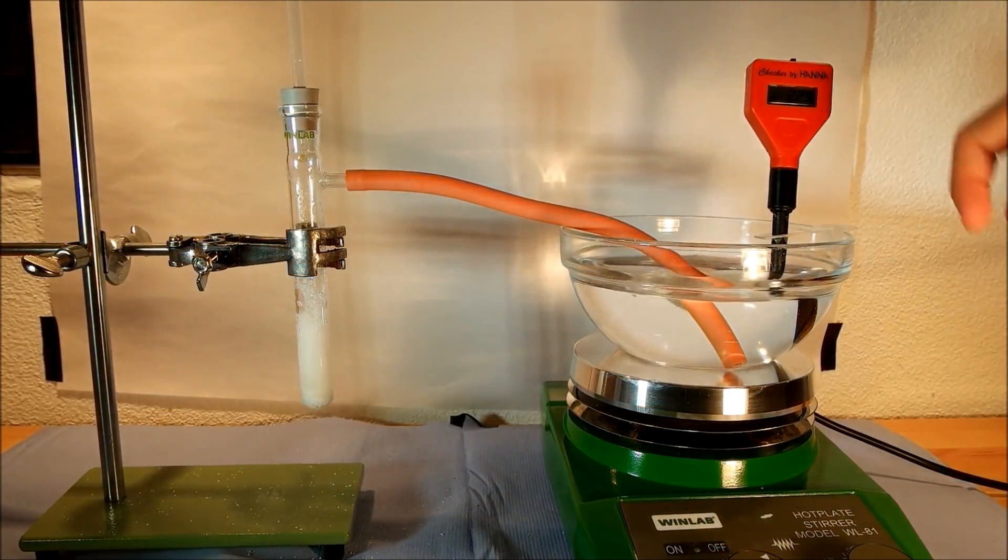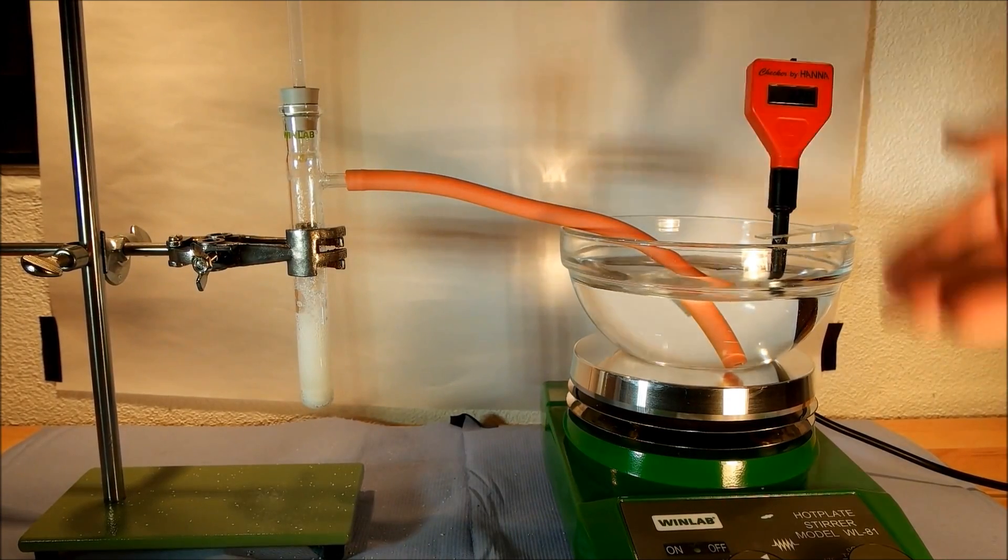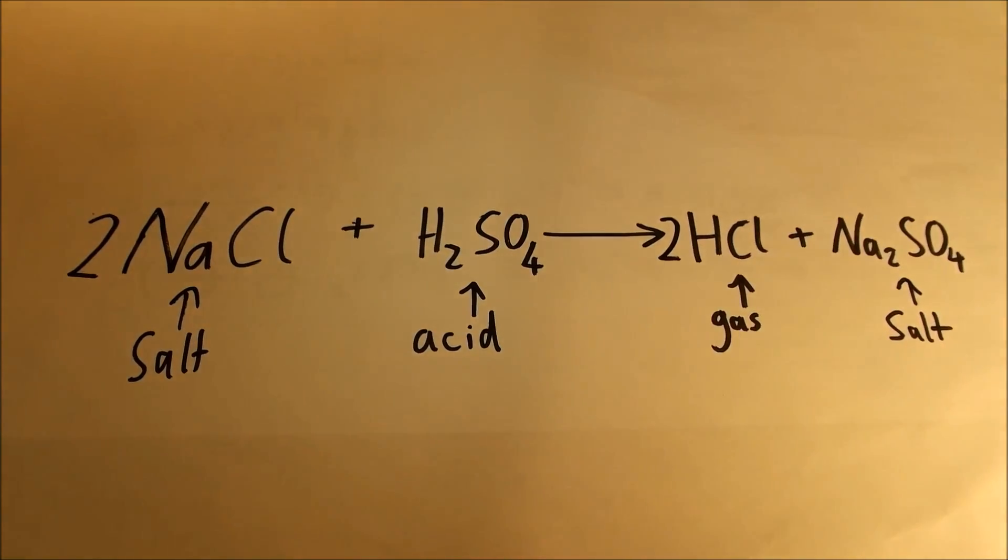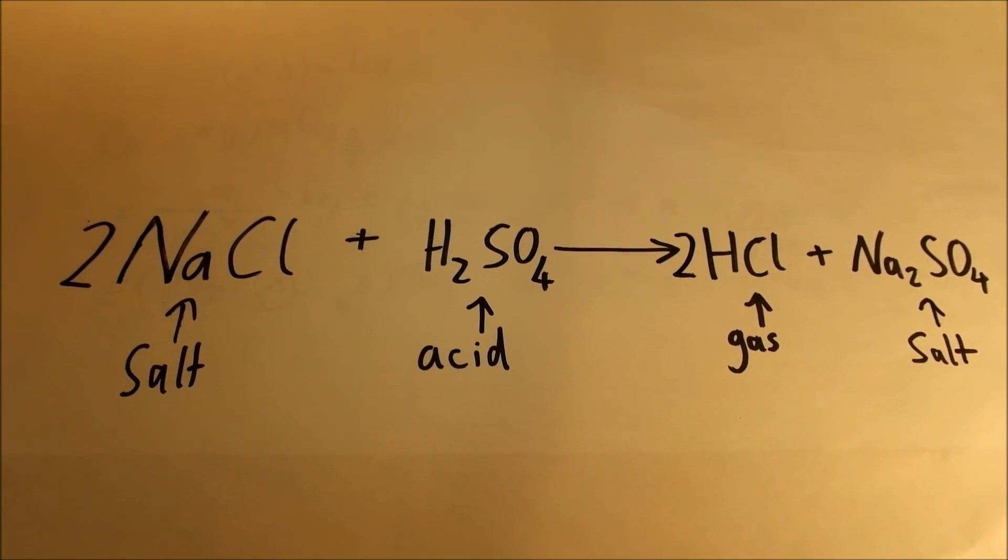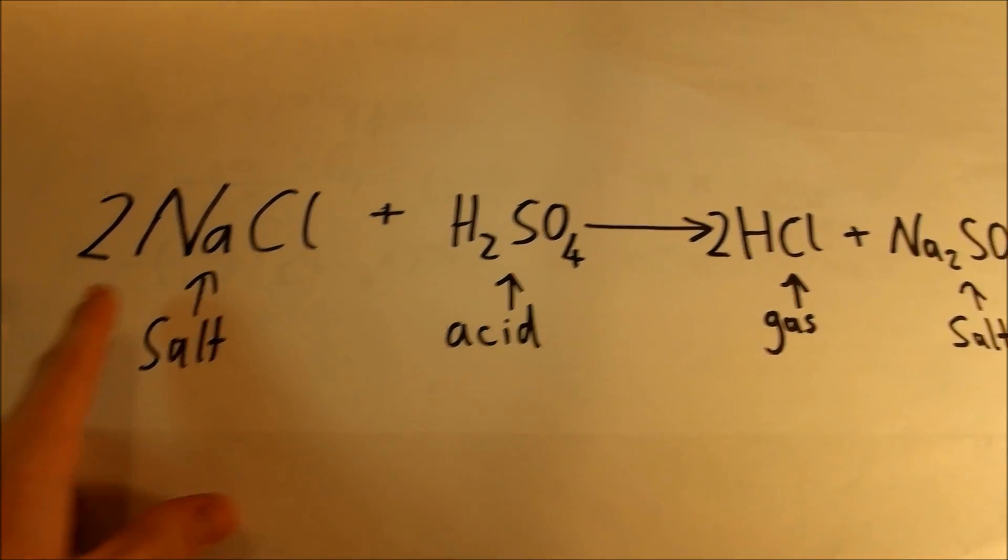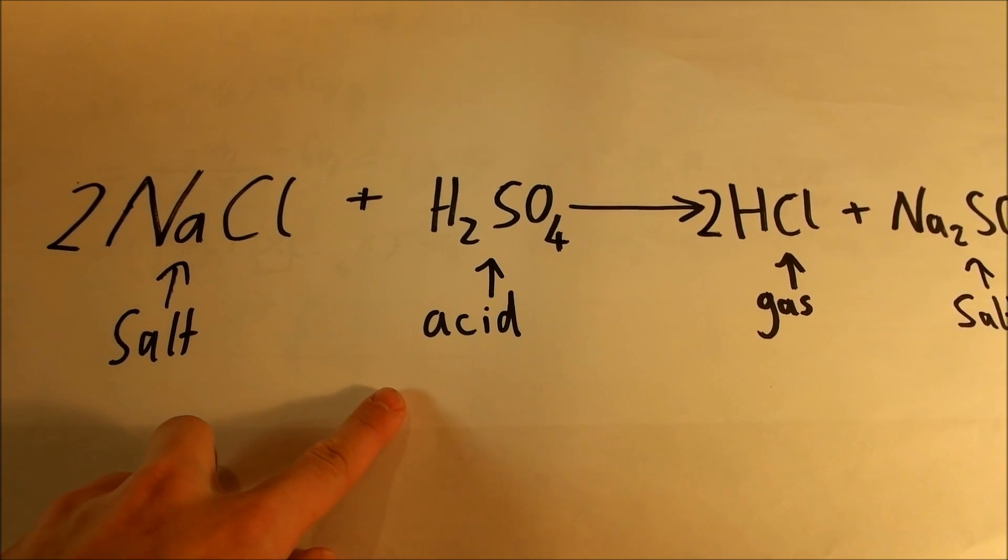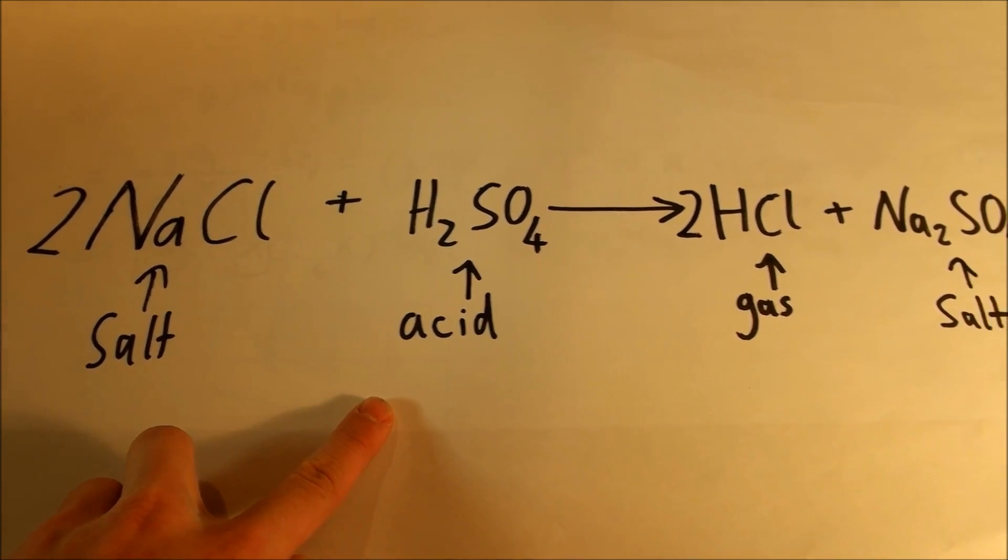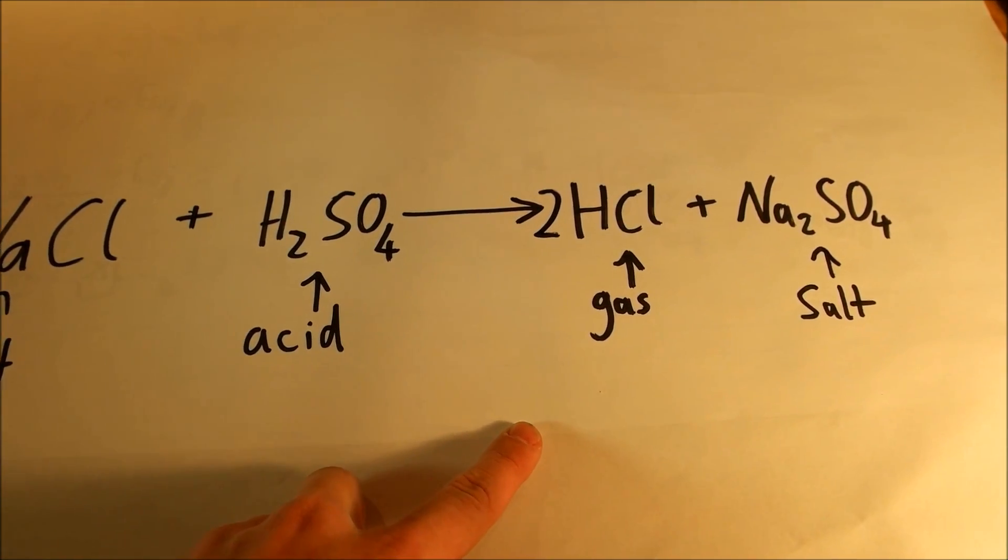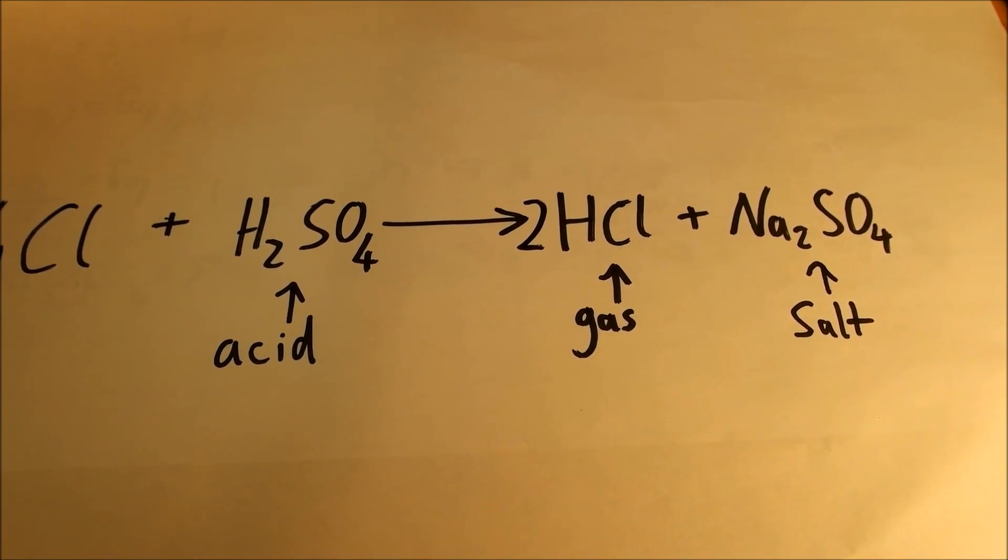Apart from the hydrochloric acid, sodium sulfate is also produced in this reaction. Here you can see the chemical equation for this reaction: sodium chloride and sulfuric acid make hydrochloric acid and sodium sulfate.